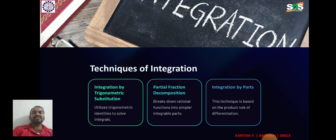Trigonometric substitution involves using trigonometric identities to simplify integrals containing radicals. For example, root of a square minus x square, root of x square plus a square, or root of x square minus a square.